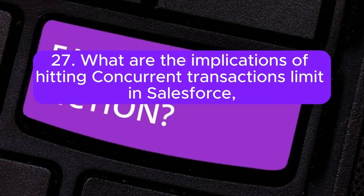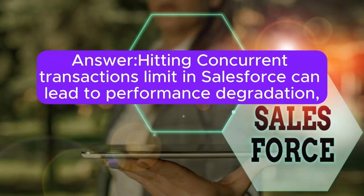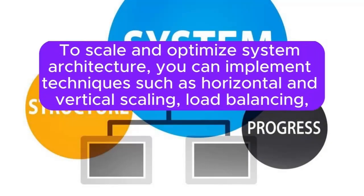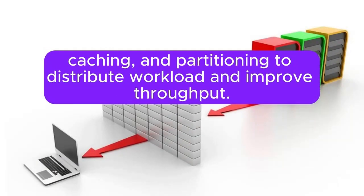Question 27: What are the implications of hitting concurrent transactions limit in Salesforce, and how do you scale and optimize system architecture to handle concurrent usage? Answer: Hitting the concurrent transactions limit can lead to performance degradation, resource contention, and potential impact on system stability and reliability. To scale and optimize system architecture, you can implement techniques such as horizontal and vertical scaling, load balancing, caching, and partitioning to distribute workload and improve throughput.